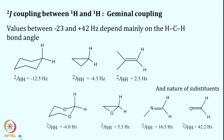Two-bond proton-proton coupling is called geminal coupling, ranging from −23 to +42 Hz. The sign of the coupling does not affect the observed splitting pattern; only the absolute value matters. Geminal coupling is dictated by the H-C-H bond angle. For example, one molecule shows a two-bond coupling of −12.5 Hz.